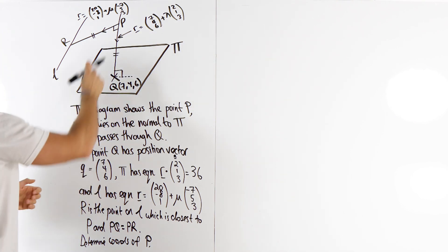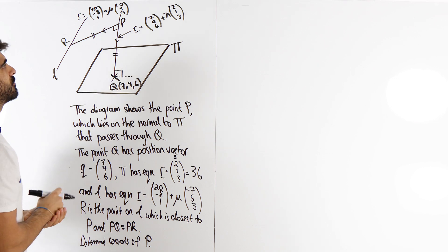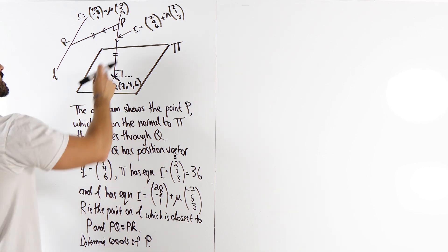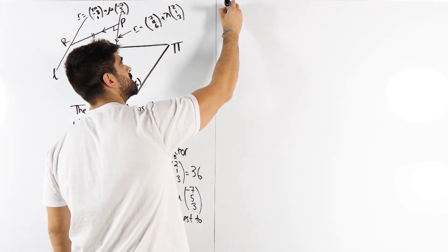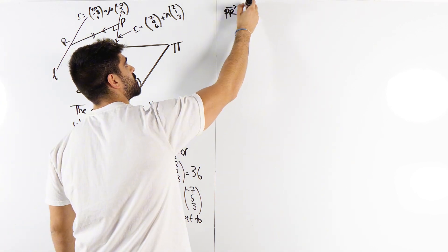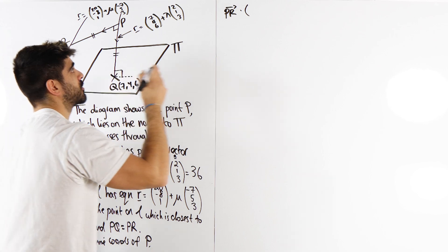Okay, how do we do that? How do we find this direction? The only way to do that really is by working out what is PR. So we're saying PR dotted with the normal 2, 1, 3 is zero. Actually no, it's not a vector, is it?